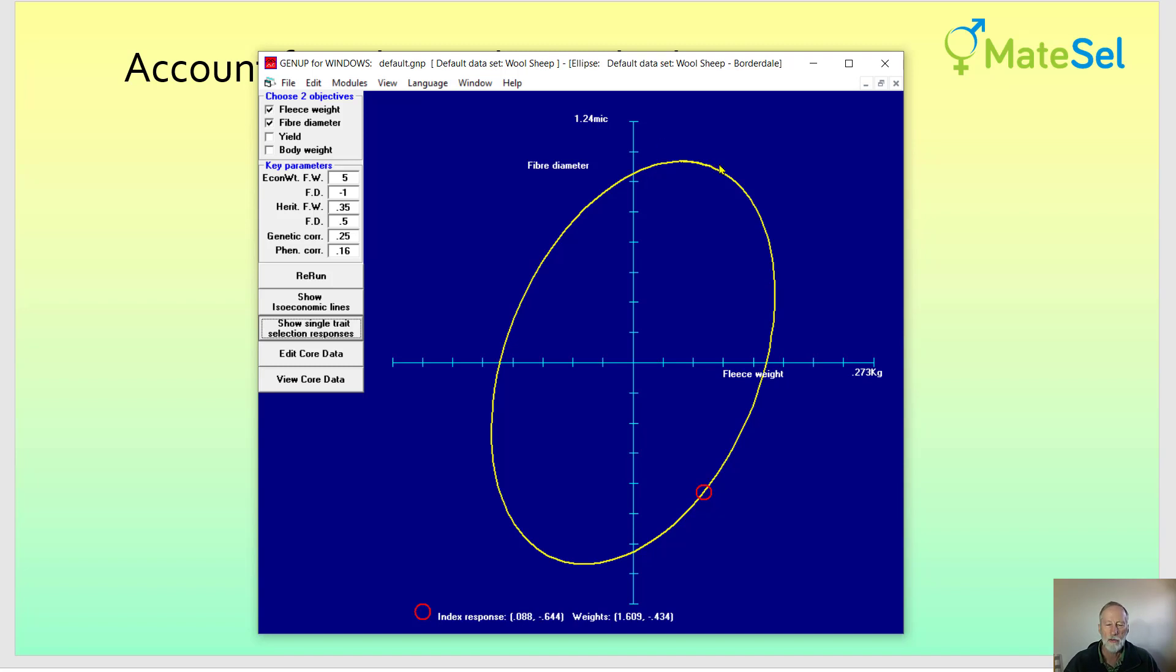So here we've got fibre diameter and fleece weight in sheep and you start here and in a given period of time you can have genetic merit of the population land anywhere on this yellow ellipse as a function of the relative weighting that you give to each in an index to push them.